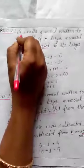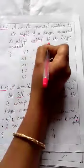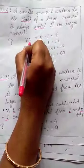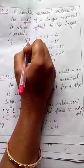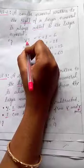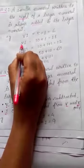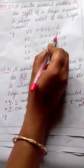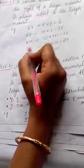Rule 2: A smaller numeral written to the right of a larger numeral is always added to the larger numeral. For example, VI means V is the larger number and I is the smaller number written on the right side, so 5 plus 1 equals 6. XI means 10 plus 1 equals 11. XII means 10 plus 1 plus 1 equals 12.